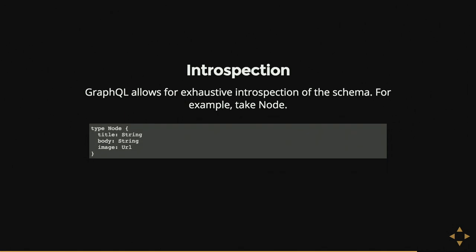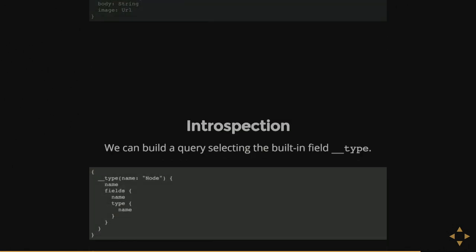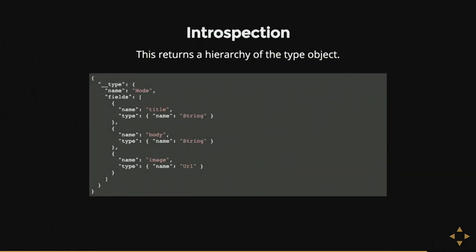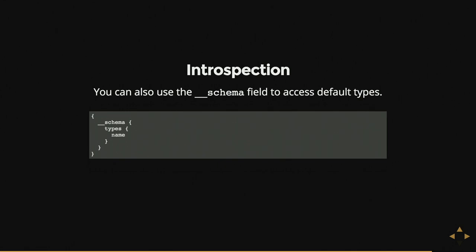You can have exhaustive introspection of the schema by submitting a query — the same way it should work for any REST API but built into the GraphQL specification. This returns a really nice output giving you full introspection into what types are declared and how the hierarchy works. You can also use the double-underscore schema field as well.